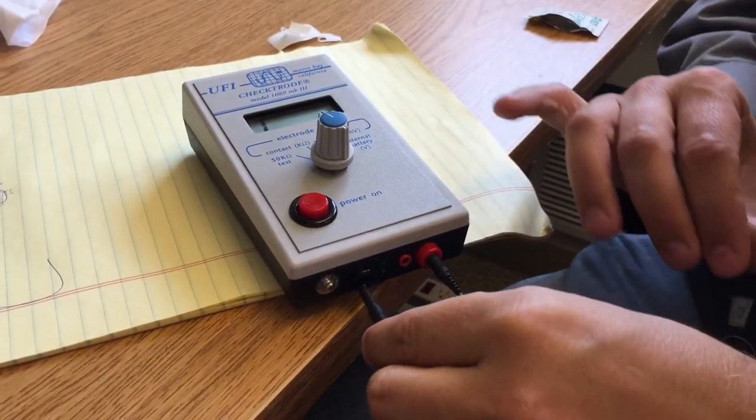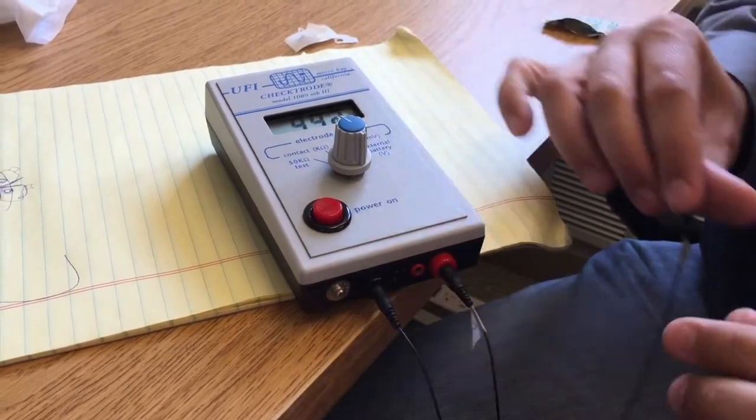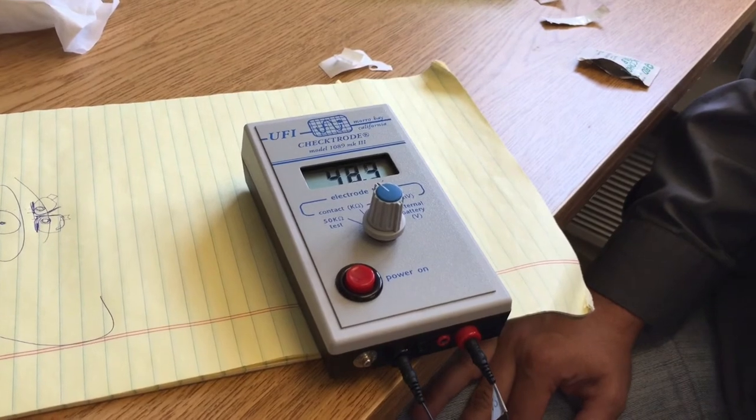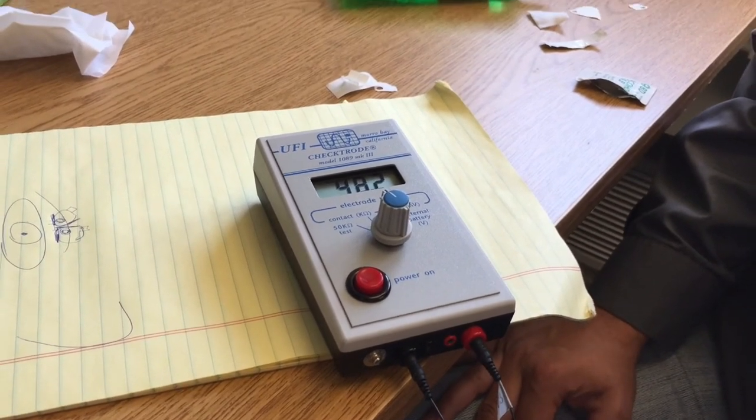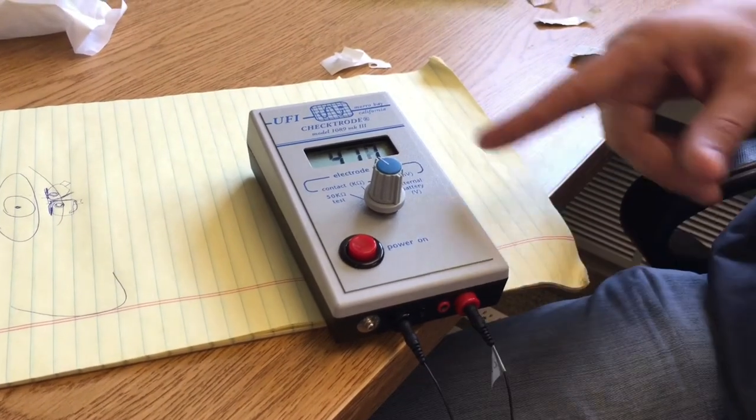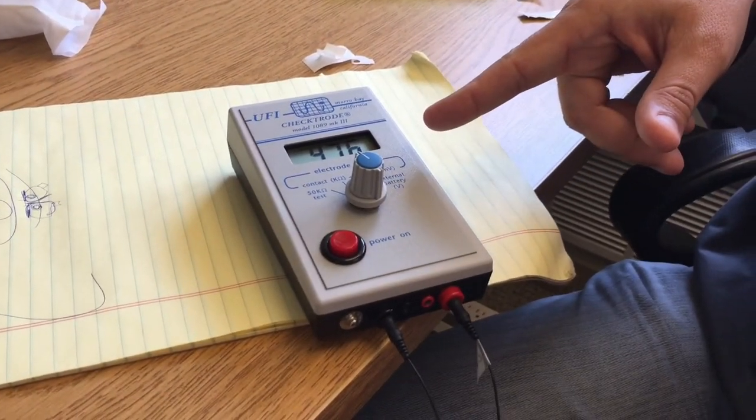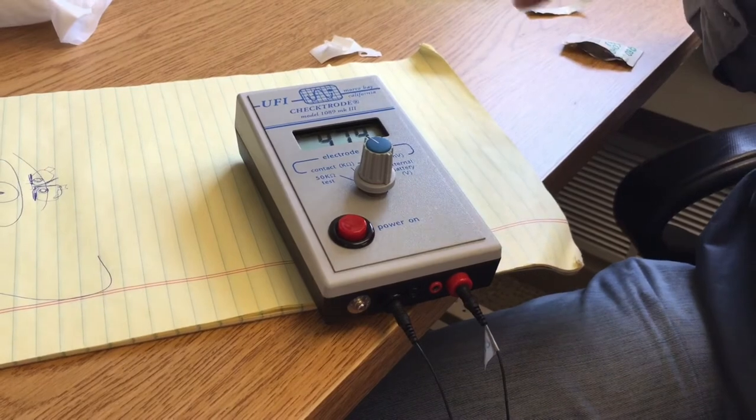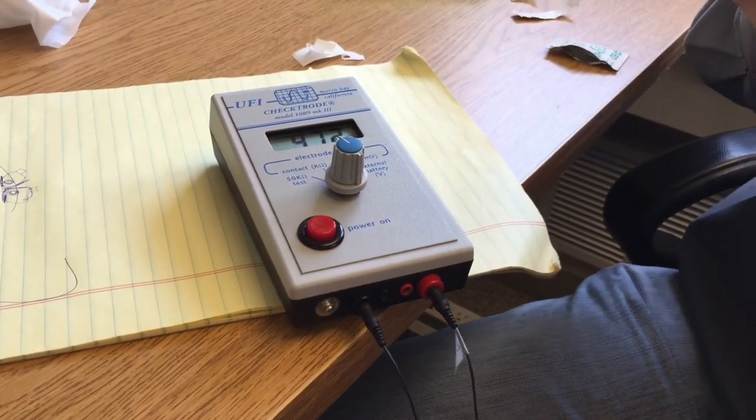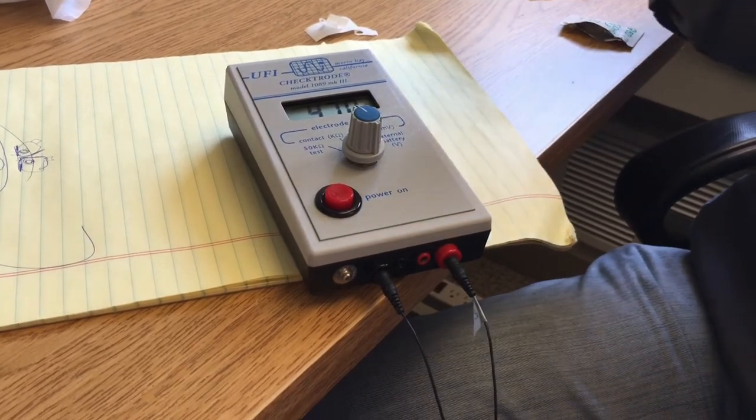That one's a twenty-three. Now we're going to see how well they talk to each other. Not bad, still below fifty so that should be okay. These are the two recording ones, measuring the resistance in between them. That's about forty-something, forty-seven kiloohms.